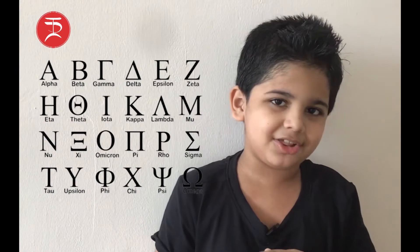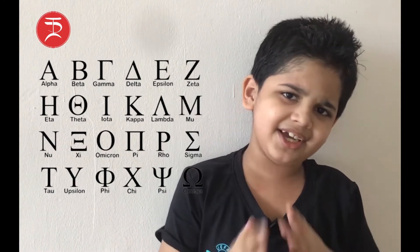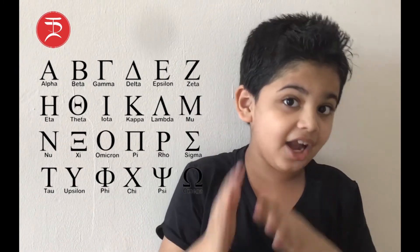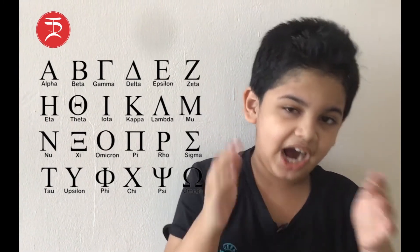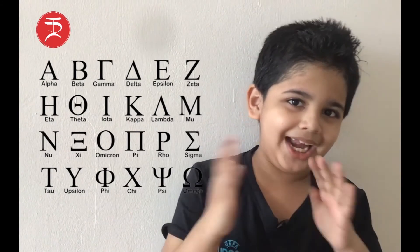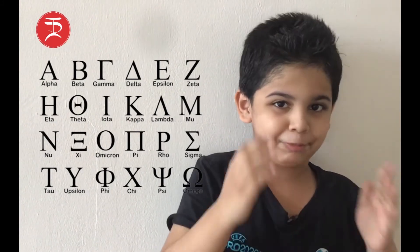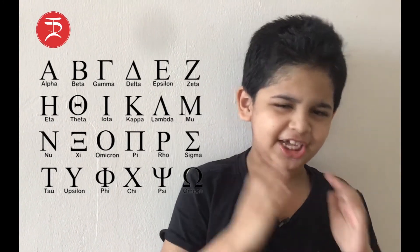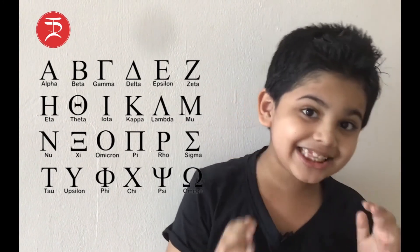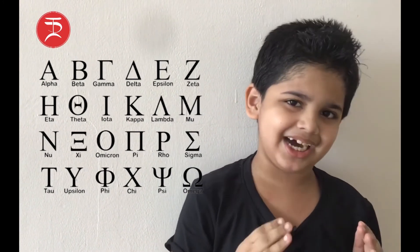which consists of 24 letters. They are: alpha, beta, gamma, delta, epsilon, zeta, eta, theta,